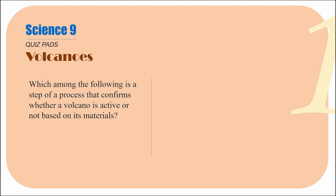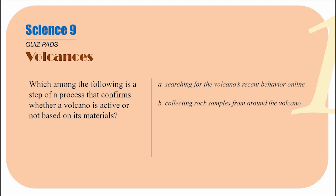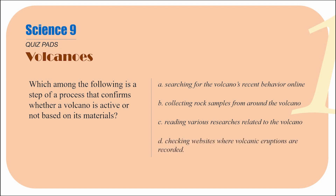If you're going to classify a volcano based on its materials, here are the options: A — searching for the volcano's recent behavior online; B — collecting rock samples from around the volcano; C — reading various researches related to the volcano; D — checking websites where volcanic eruptions are recorded. Three of these options share a general theme. Read them again and identify which three are similar, and which one is slightly different.